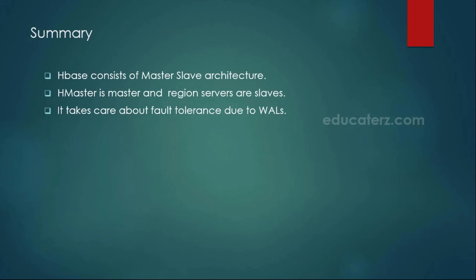In summary, in this module we have seen how the HBase architecture looks like with the H Master and the region servers. The H Master works as the master node, and the region servers are the slaves. The region servers consist of multiple regions — which are parts of table content. For fault tolerance, whatever data is in the MemStore is written into your WAL logs, and those WAL logs are written into HDFS. In case of machine failure, we can retrieve the WAL logs and get back the data from the MemStore. In the next module we are going to discuss how to log into the HBase shell and create tables and execute commands.